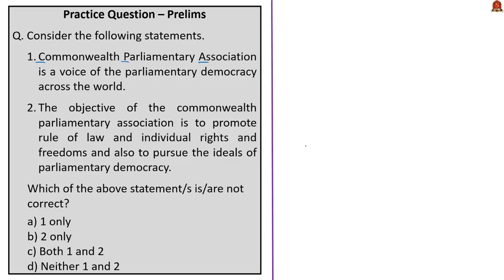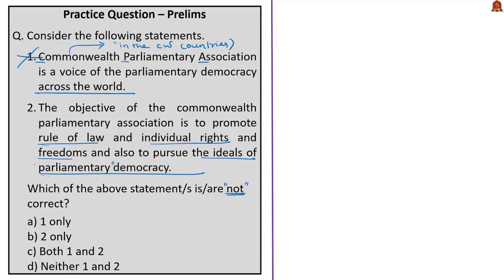This question is with reference to the Commonwealth Parliamentary Association. Two statements are given, asking which are NOT correct. The first statement: it is the voice of parliamentary democracy across the world. This is incorrect — the Commonwealth Parliamentary Association is the voice of parliamentary democracy across the Commonwealth countries, not across the world. The second statement: its objective is to promote the rule of law, individual rights and freedoms, and the ideals of parliamentary democracy — correct. The incorrect statement is statement one, so the answer is option A.